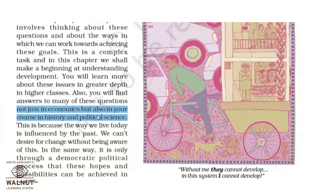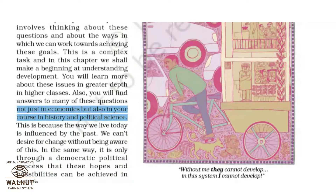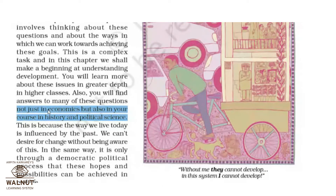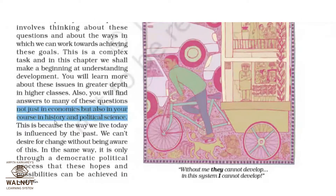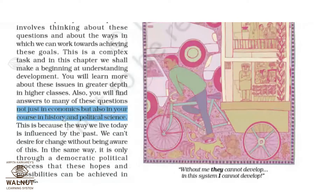Development is not just relevant in economics, but also in your courses of history and political science. It is interdisciplinary. If I say my country is earning more — for example, countries in the Middle East are earning a lot because of oil revenue — when income increases we can say the country is economically developed. But how can we see development in history and political science?